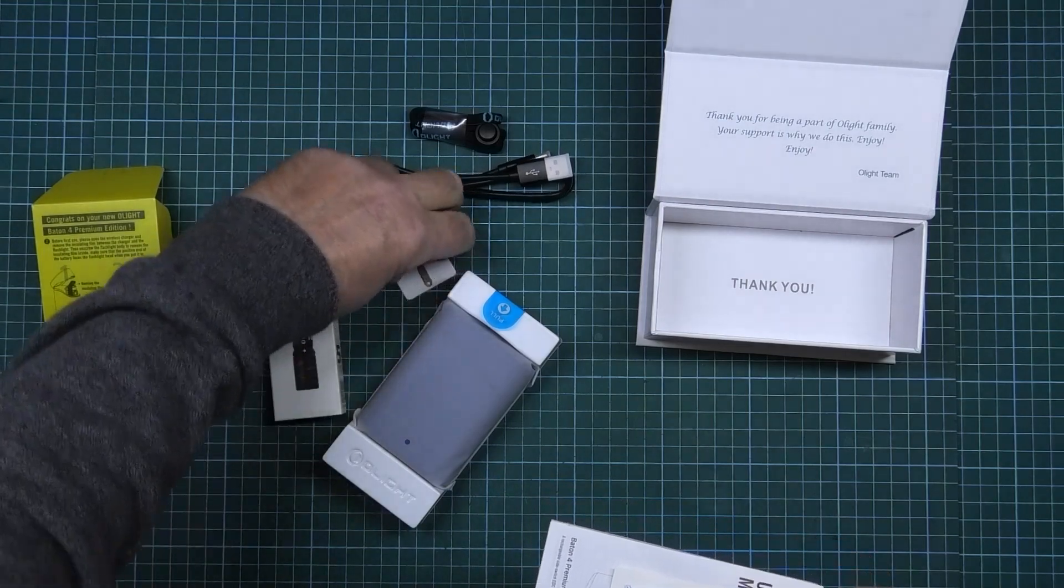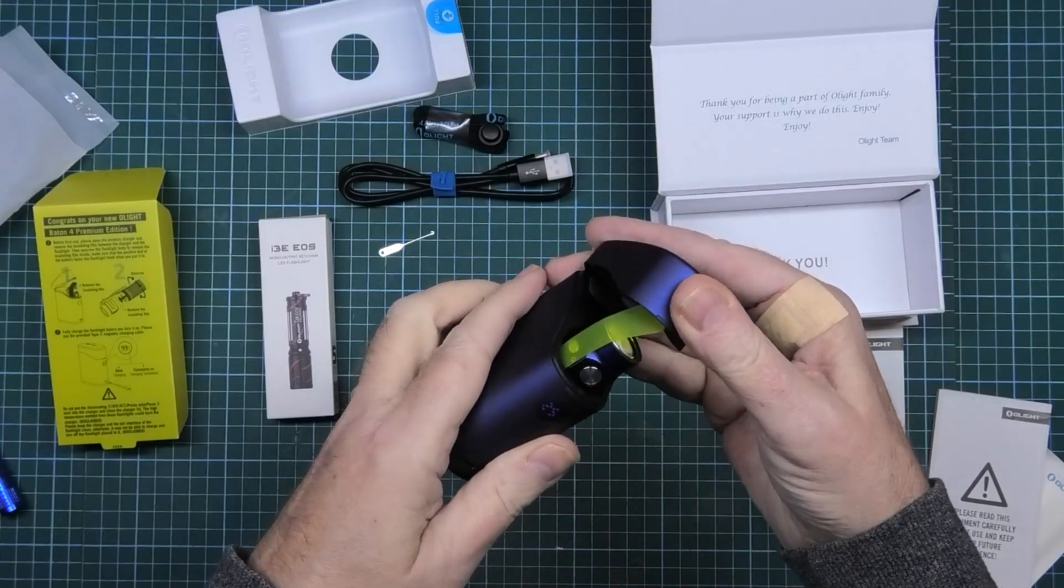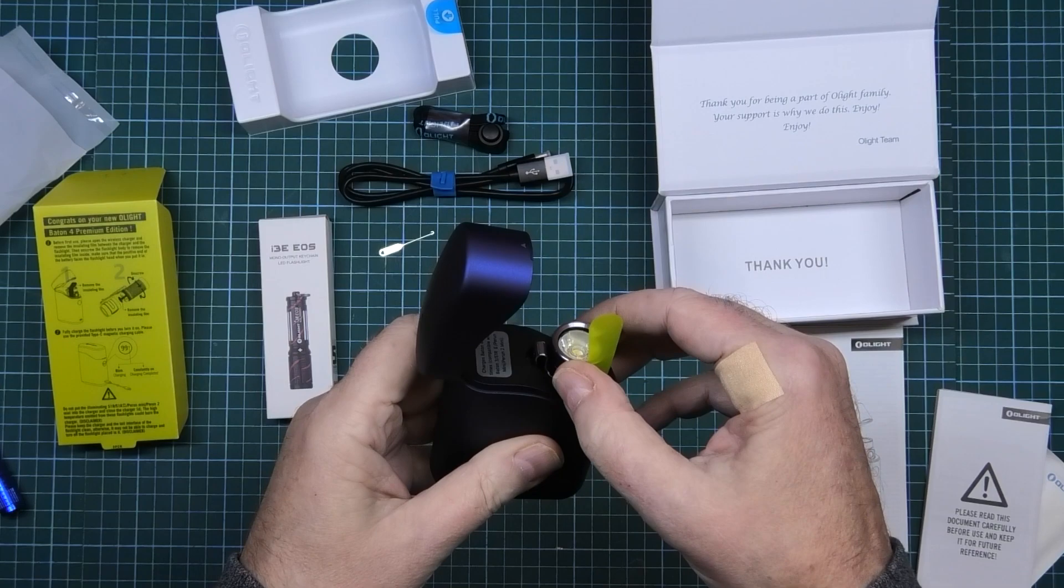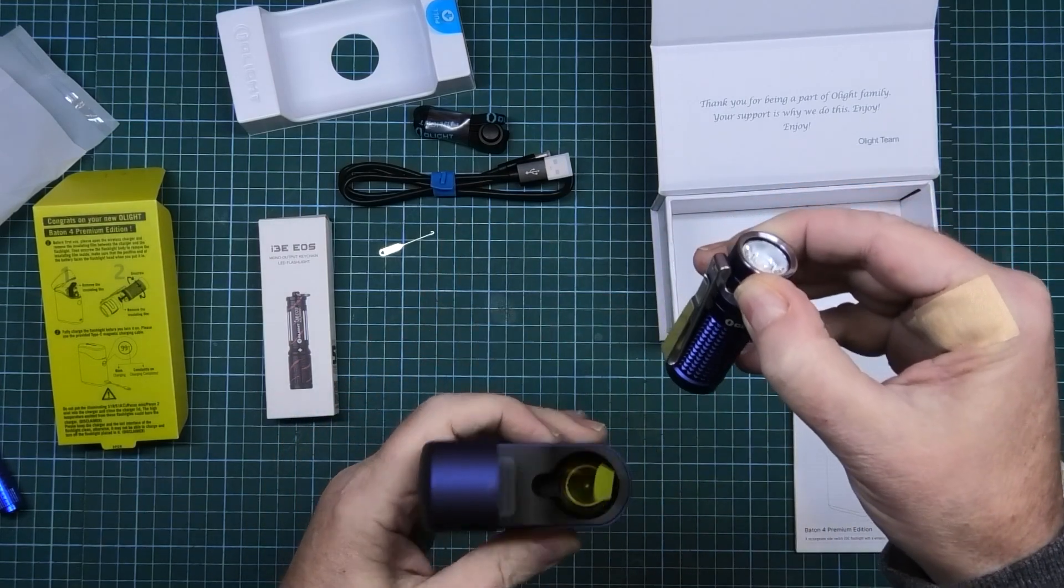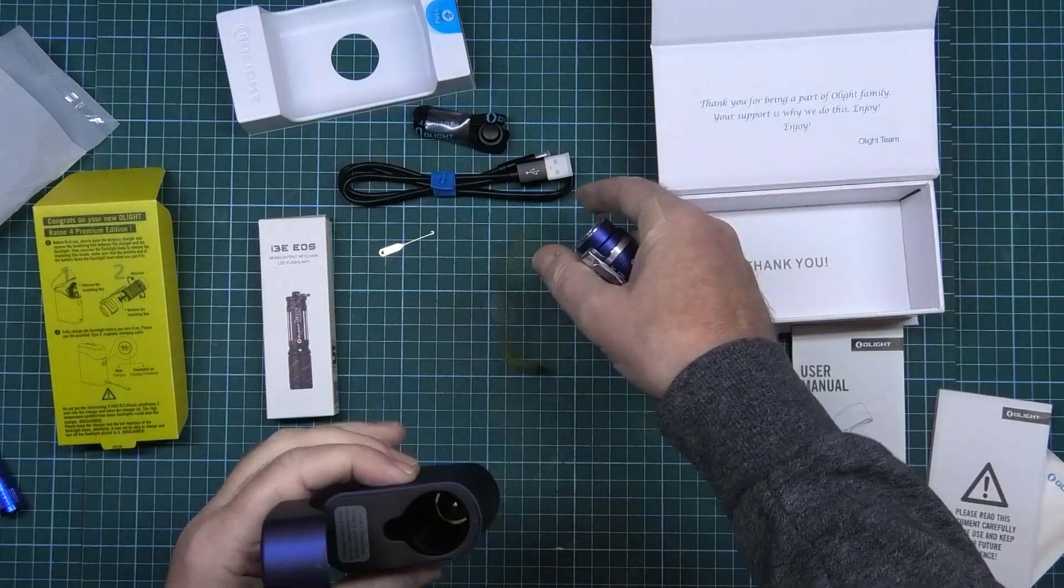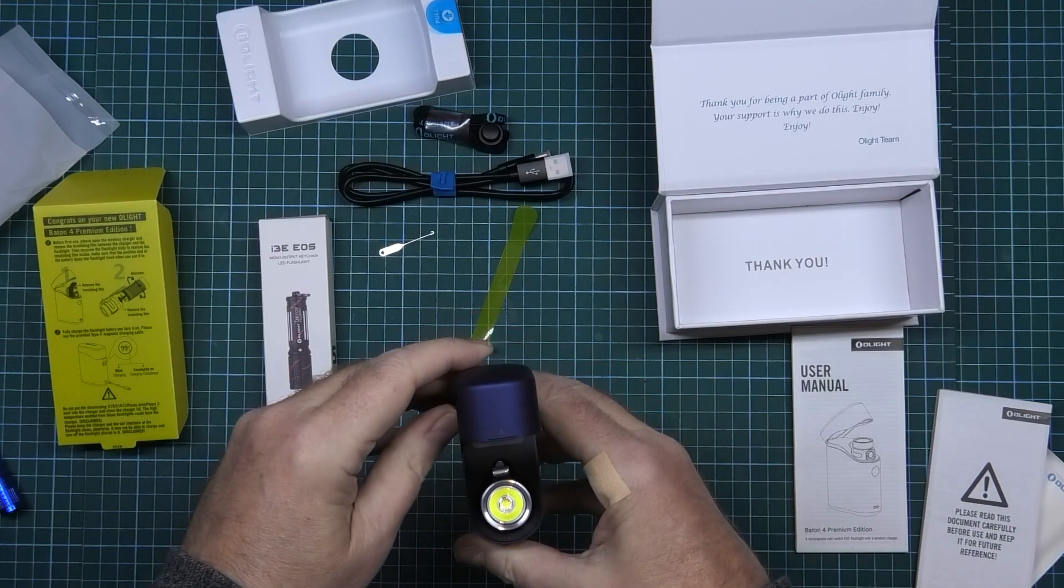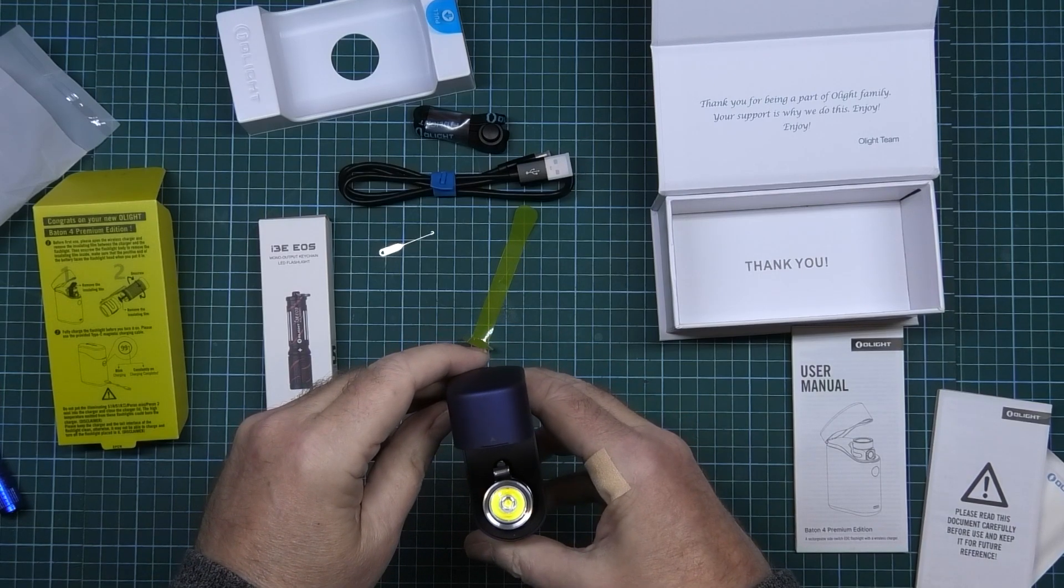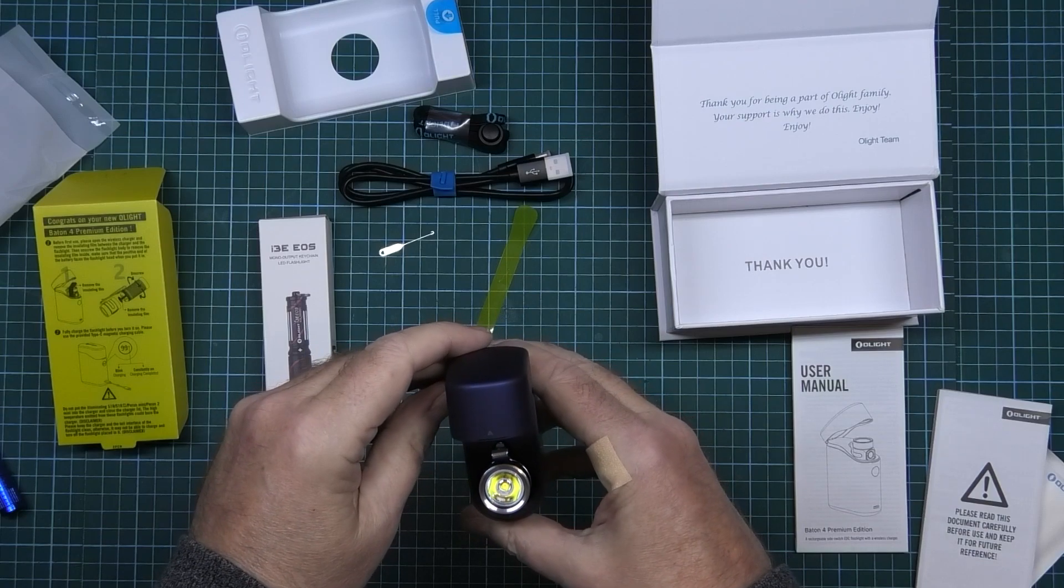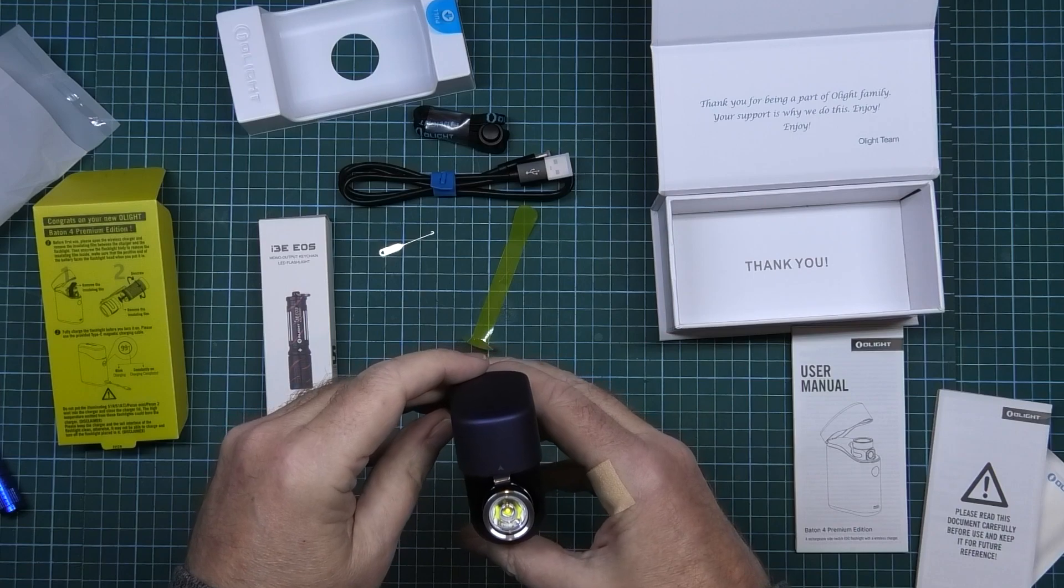What the hell's that for? So that's the sealer. Charges Batten 4 five times, compatible with Batten 3, 3SR, 3 Penham Mini, Mini 2.